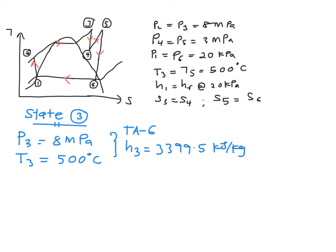And you will need another value since you are going to solve your state 4 after this. You will need the S3 because your entropy at state 3 is equal to your entropy at state 4. So from table A6, your S3 at 8 MPa, 500 degrees C is equal to 6.7266 kJ per kg·K.